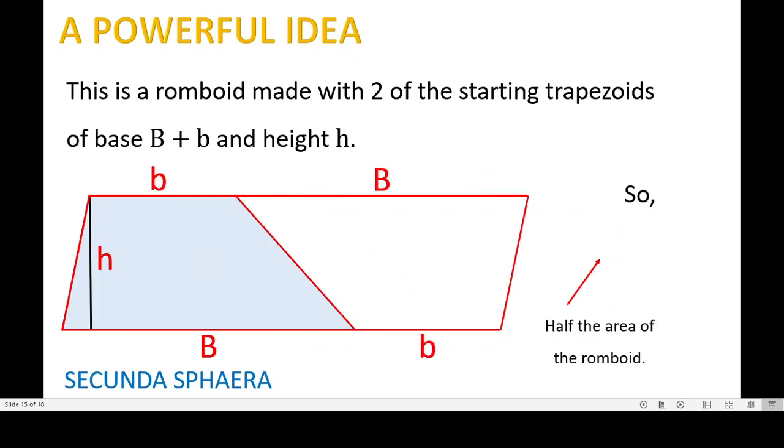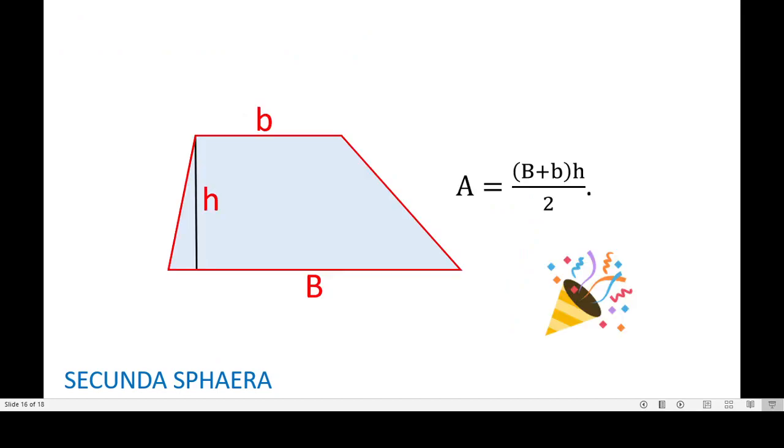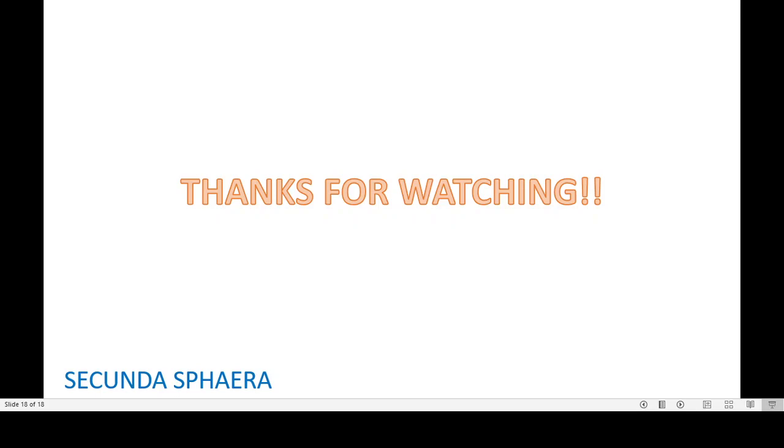So we are going to have that the area of the starting trapezoid is half of the area of the rhomboid. So the formula that we want, that's it, thanks for watching.